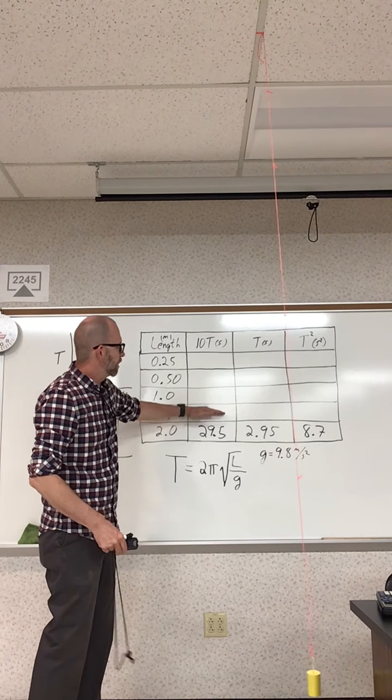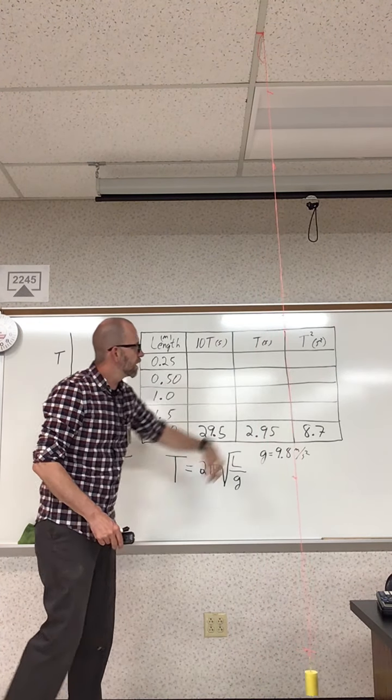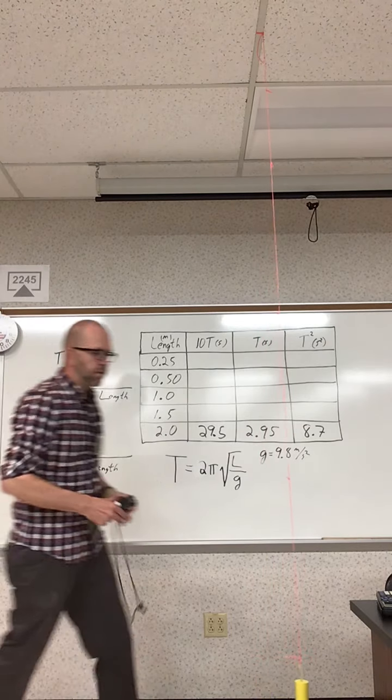So from now on, I'll time them, I'll do the ten swings. You go ahead and calculate what one tenth of that is and what the square is, and then do the graphing.